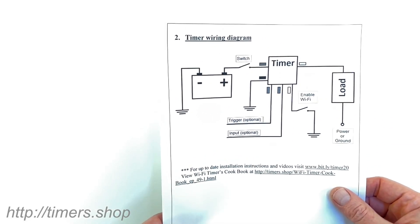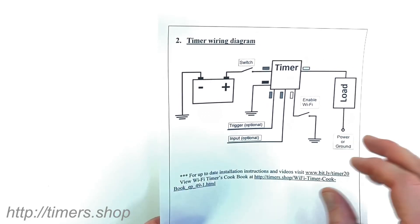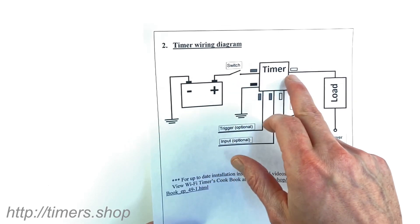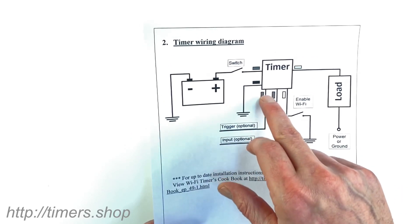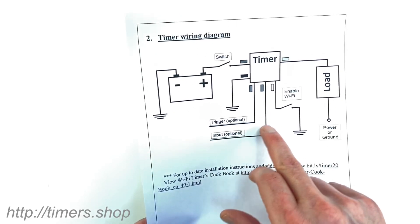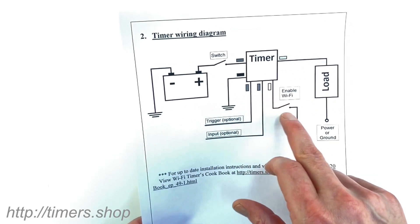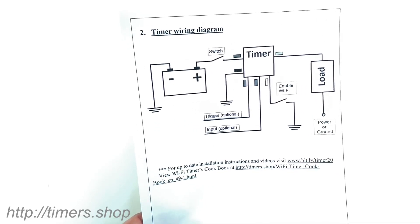Timer connection is very similar to the 10 amp timer. The red wire is the input power, the yellow is the output, black is the ground, blue is the trigger, green is additional input and white is to enable the Wi-Fi programming.